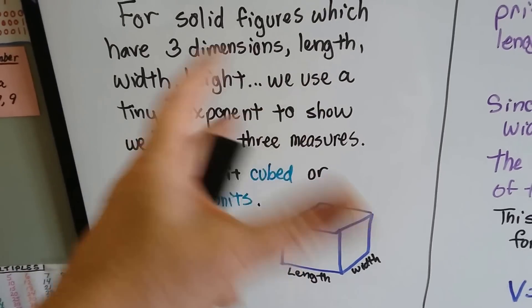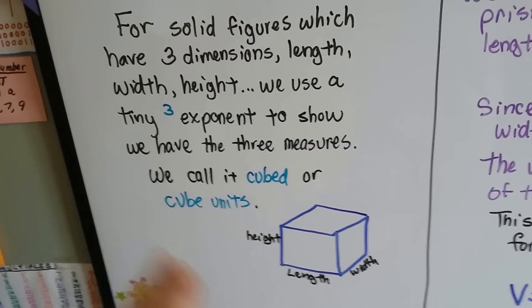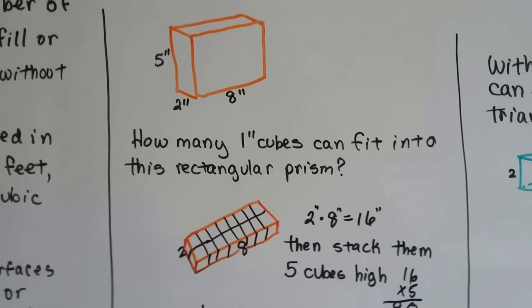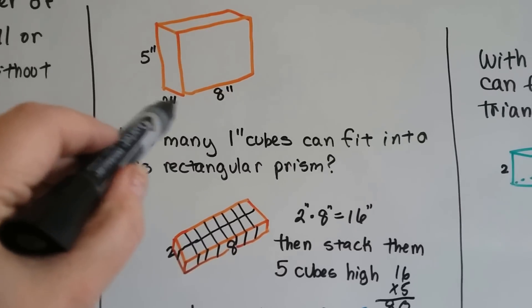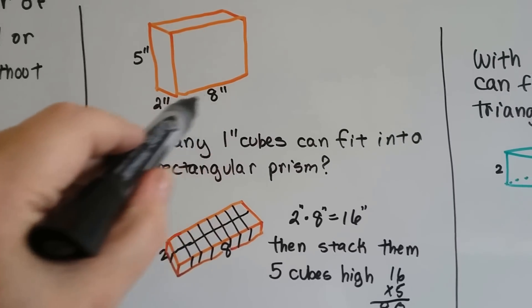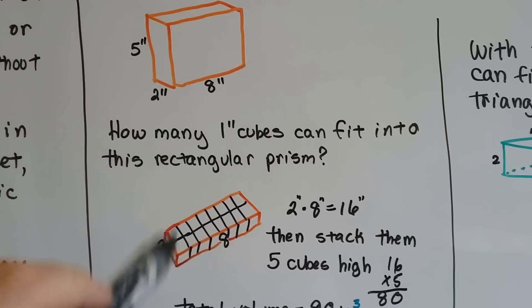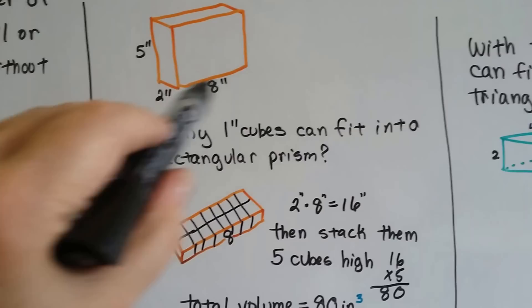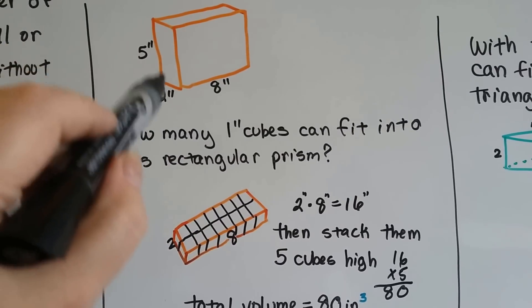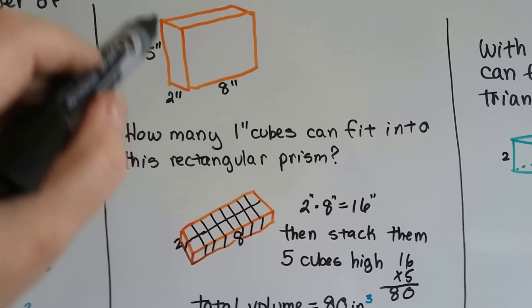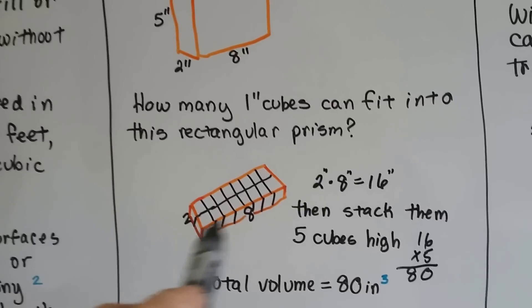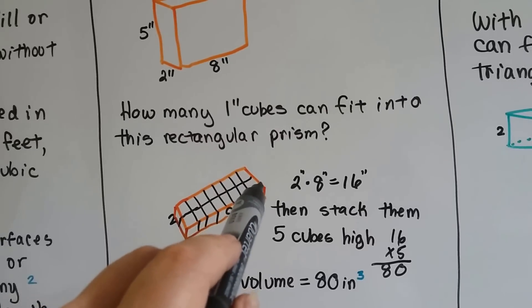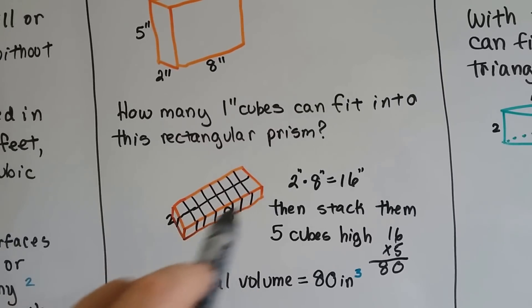How many cubes can fit into this rectangular prism? We see that it's 2 inches across, 8 inches long, and 5 inches tall. We figure out how many cubes would fit in one layer, then multiply by how many layers we need. On the first layer, we could fit 2 one-inch cubes going this way and 8 coming down, which gives us 16 cubes on the first layer.